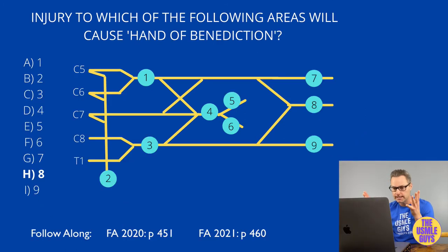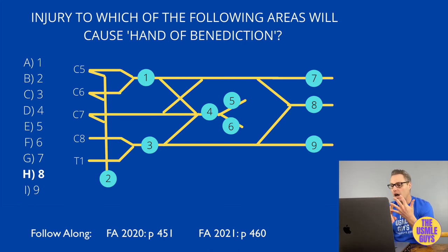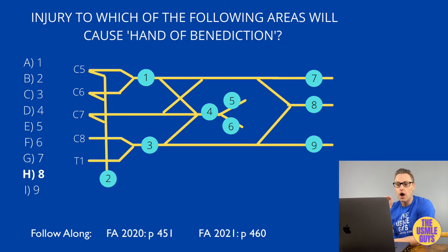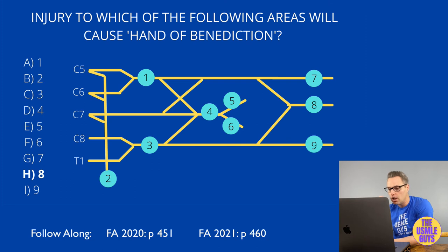The hand of benediction is a physical finding caused by decreased thumb function as a result of median nerve injury — specifically an inability to flex the MCP and IP joints of the middle and index fingers, while the ring and little fingers retain that ability. Be careful not to confuse this with the ulnar claw, due to a lesion of the ulnar nerve at the wrist, which affects the ring and little fingers with unopposed MCP extension and IP flexion. In the hand of benediction, the lateral two lumbricals and lateral half of the FDP are paralyzed; in the ulnar claw, the medial two lumbricals are paralyzed.